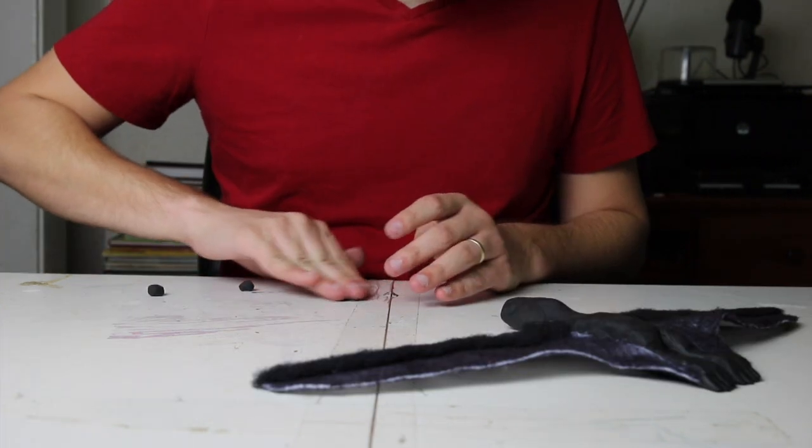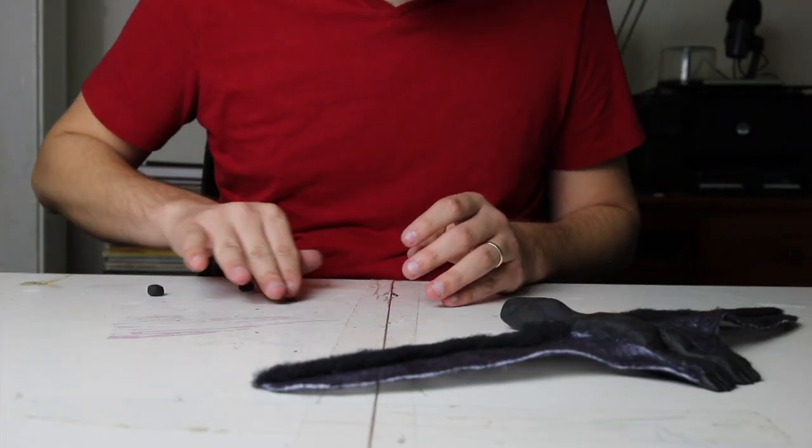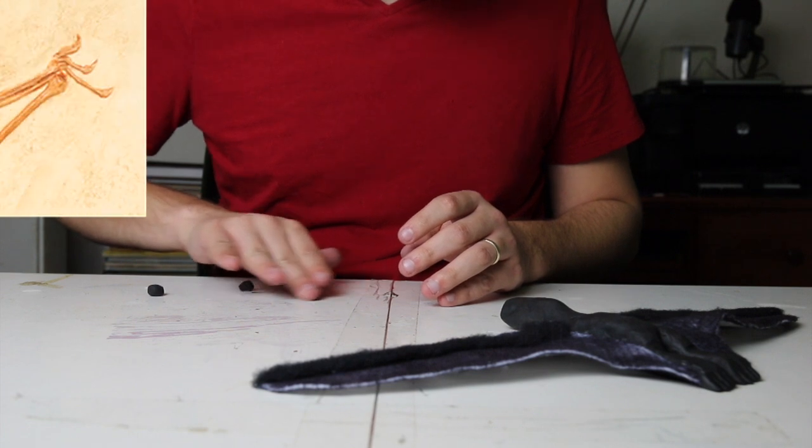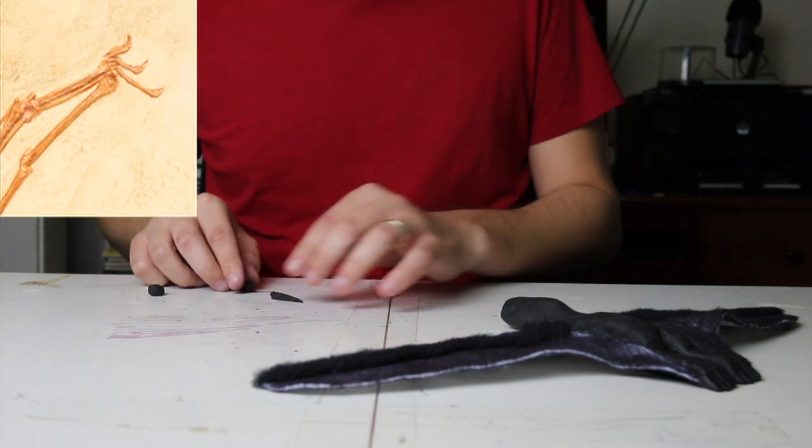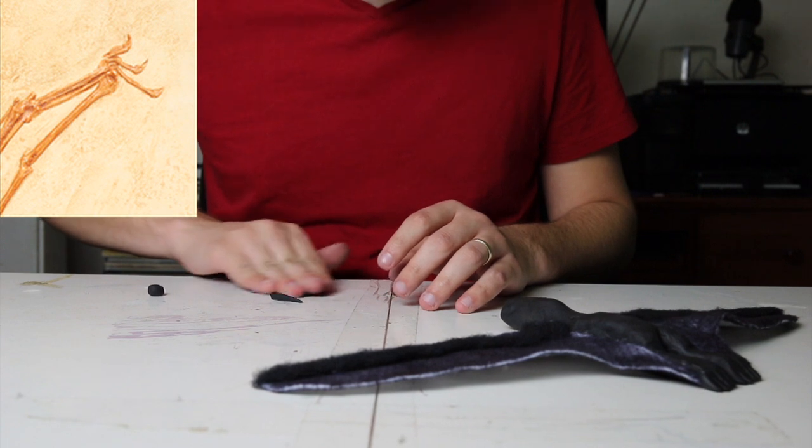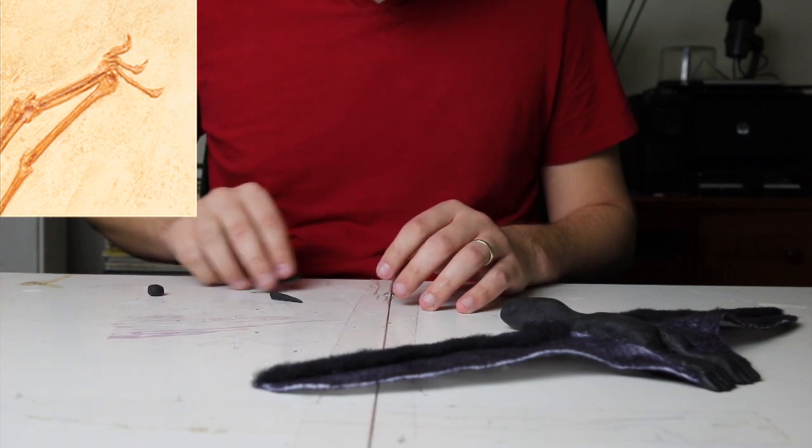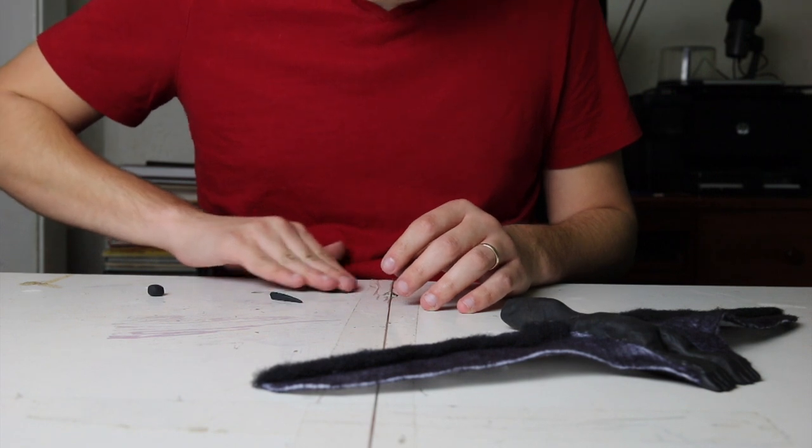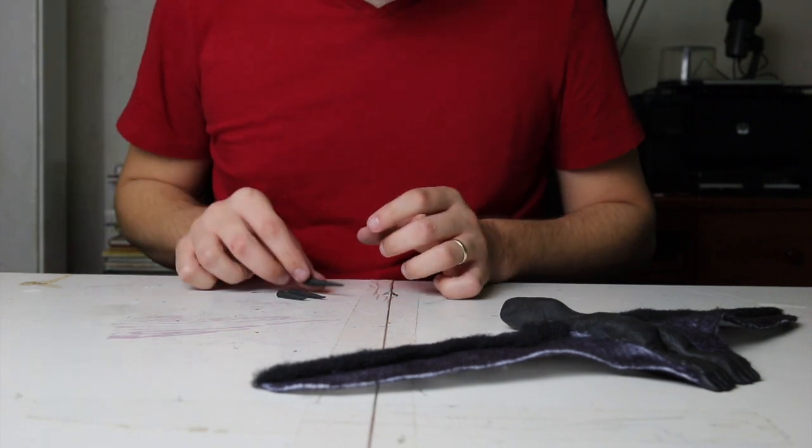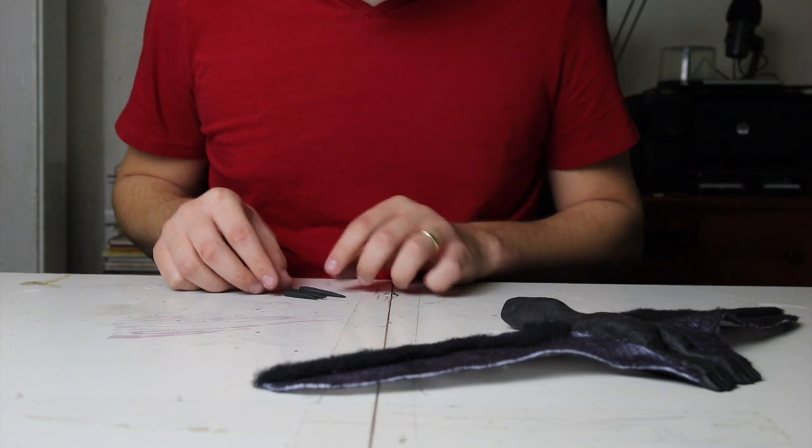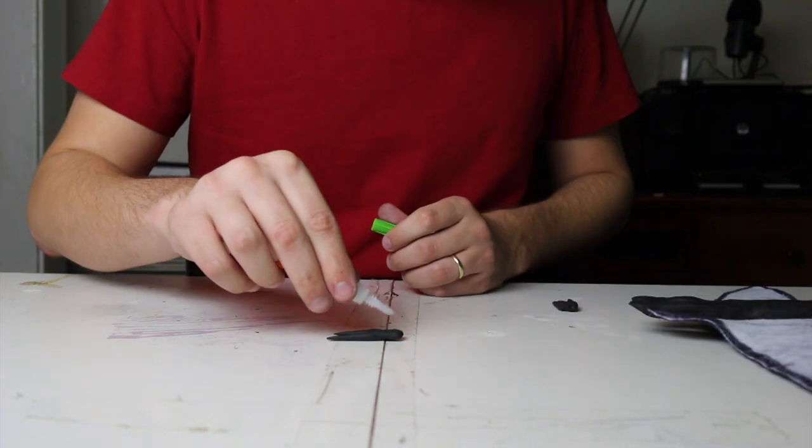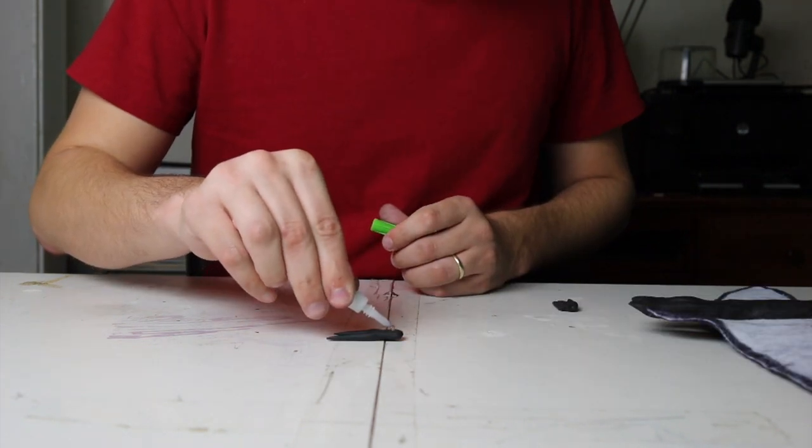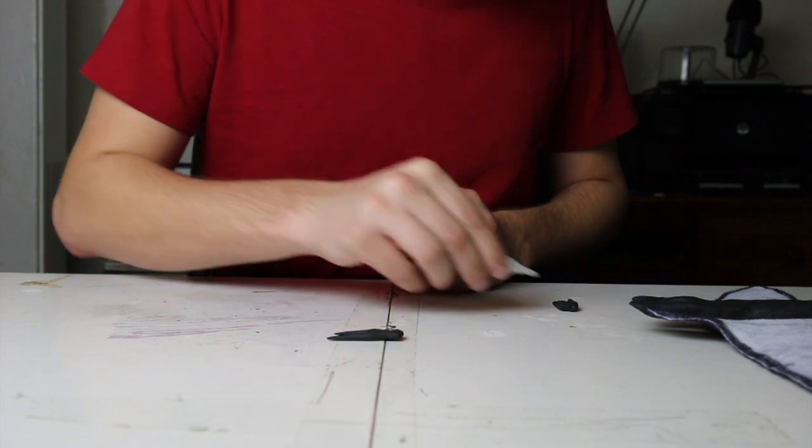The last part you want to add to the wings is the fingers. Pterodactyls had four fingers. The fourth one would have been the longest one which made up the entire length of the wing, so you've already got that one taken care of. But as for the other three I'm going to be making those out of non-drying clay and then super gluing them onto the underside of the wing at the point where the hand would be.